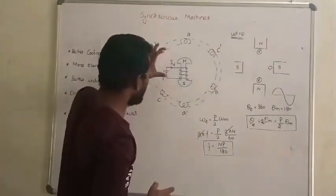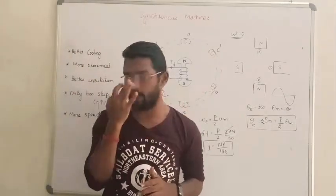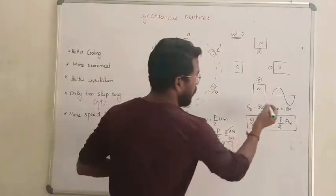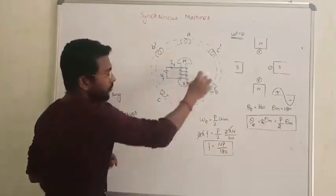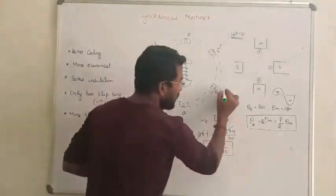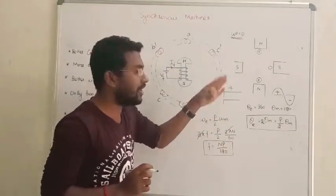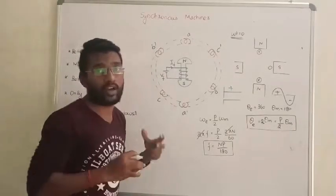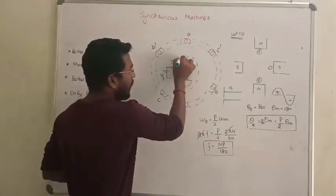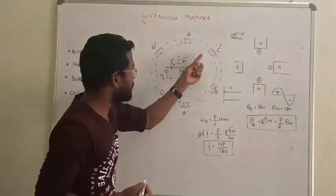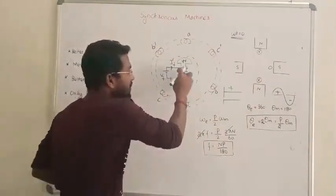What about the rotor? The rotor has DC excitation. Remember, AC has alternating polarity — positive and negative cycles — which develops a revolving field. DC is fixed; it may be positive or negative, but it cannot alternate polarity. So DC alone cannot develop a revolving field. The AC three-phase winding develops the rotating field at synchronous speed.